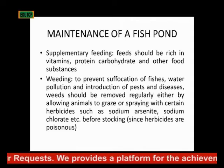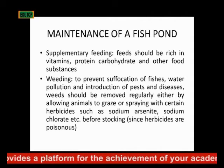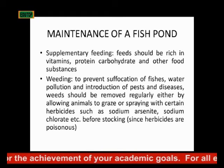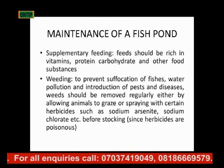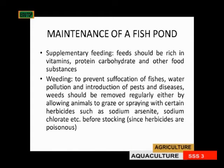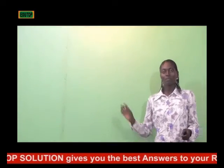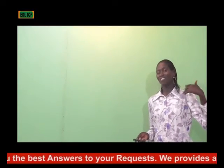Now, how do you maintain a fish pond? First is supplementary feeding — the feed given to the fish should be rich in vitamins, proteins, carbohydrates, and other food supplements; give them balanced diets. The next thing is weeding: regularly remove weeds from the pond. Plants will grow through fertilization and inoculation, but if there are too many, the fish will be suffocated, the water polluted, and pests and diseases may result.